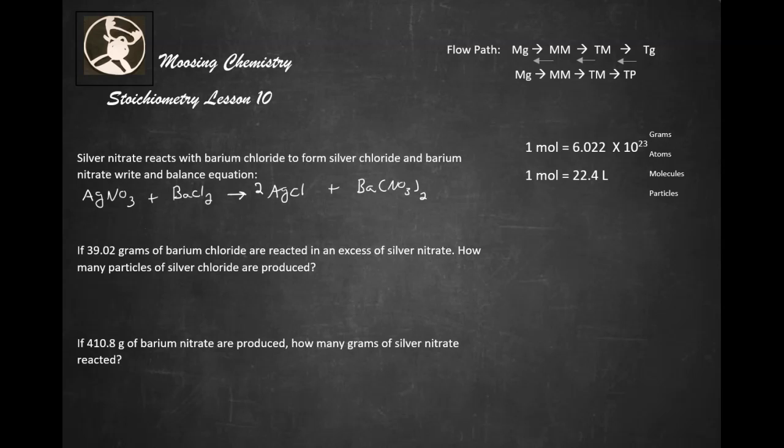Well, you have to put a 2 here and a 2 there and everything is balanced. That was pretty simple straightforward. If 39 grams of barium chloride are reacted in an excess of silver nitrate, how many particles of silver chloride are produced?